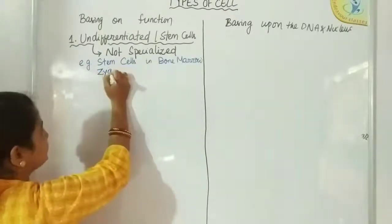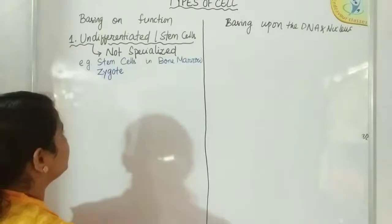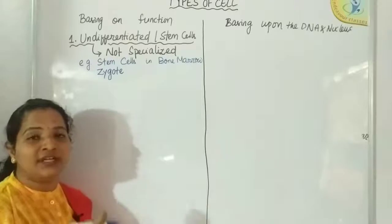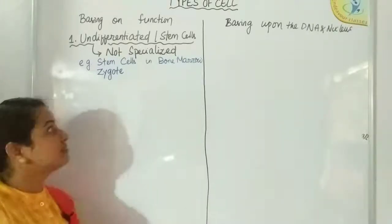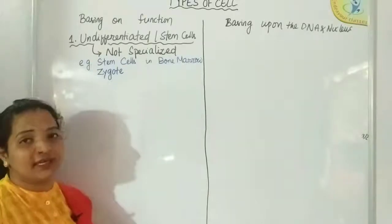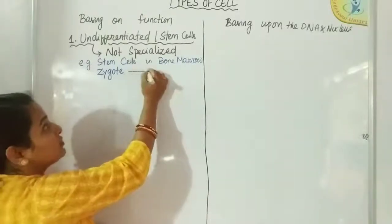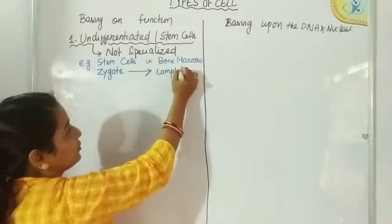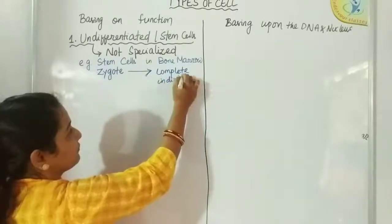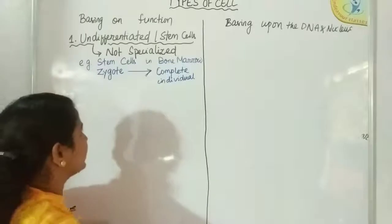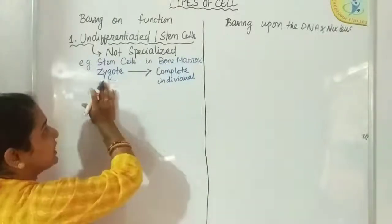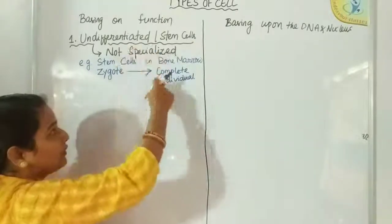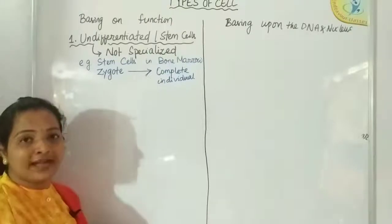Then there is the zygote — a unicellular, diploid structure formed after fertilization in higher animals. It is also acting as a stem cell. The unicellular zygote undergoes repeated mitotic divisions and a process to become a complete individual of multicellular structure.